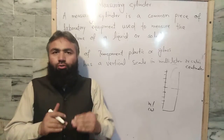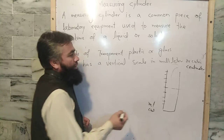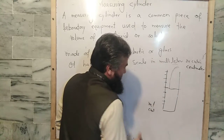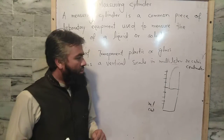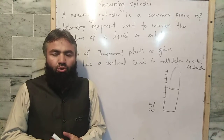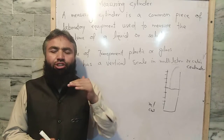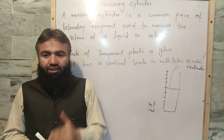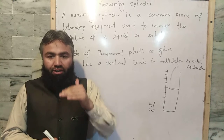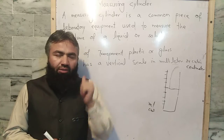If we want to find the volume of a liquid, we will pour that liquid into the measuring cylinder. When we pour the liquid in, to read the volume accurately, the observation must be at eye level and read at the bottom of the meniscus of the liquid level.